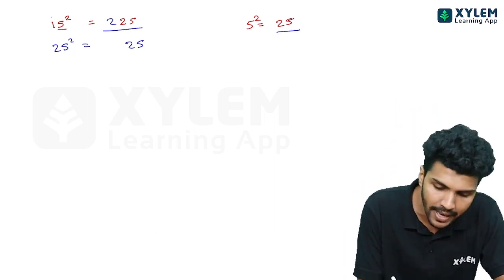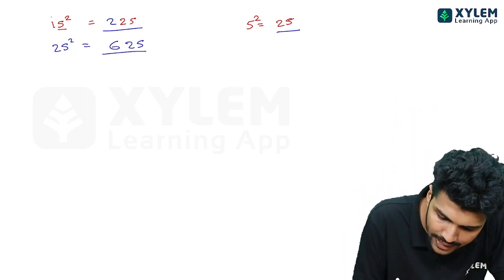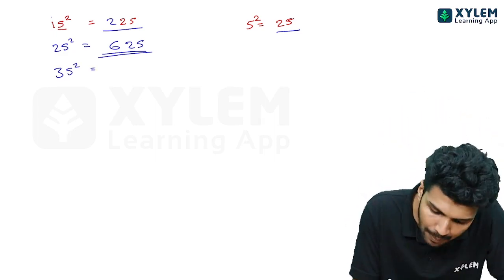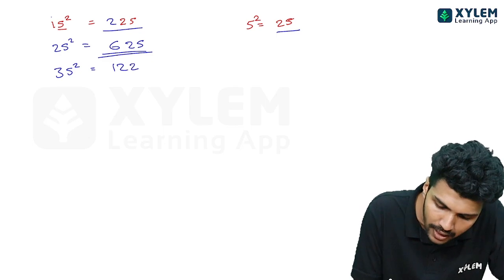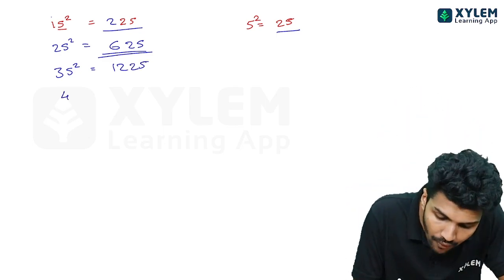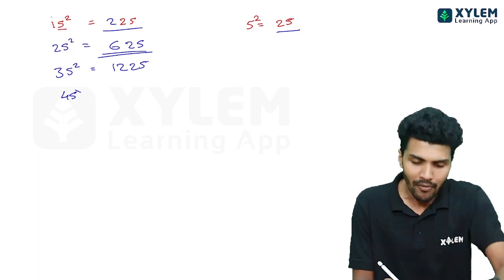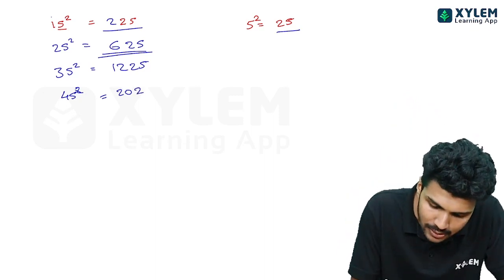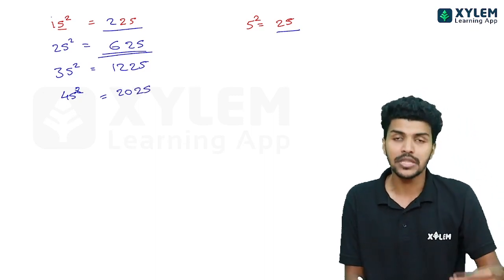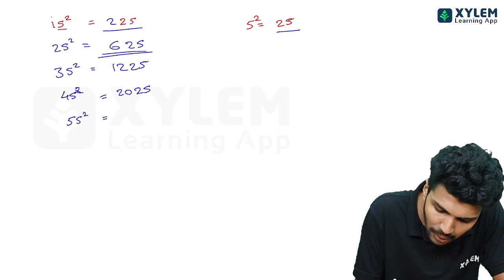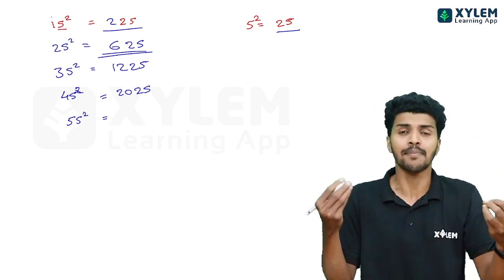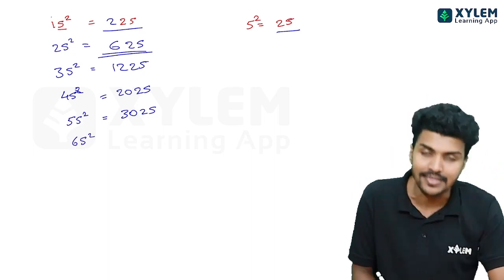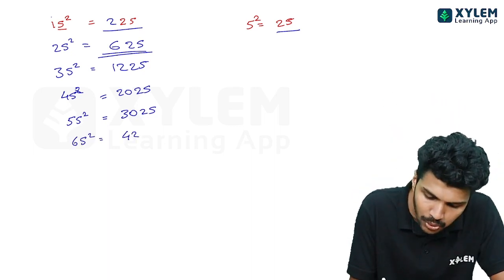35 squared: 3 times 4 is 12, append 25 — that's 1225. 45 squared: 4 times 5 is 20, append 25 — that's 2025. 55 squared: 5 times 6 is 30, append 25 — that's 3025. 65 squared: 6 times 7 is 42, append 25 — that's 4225.